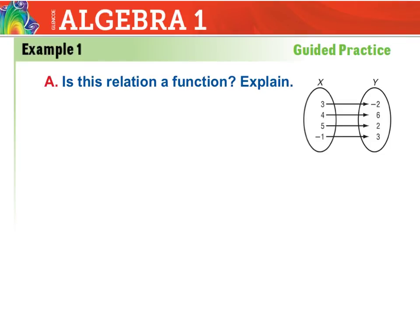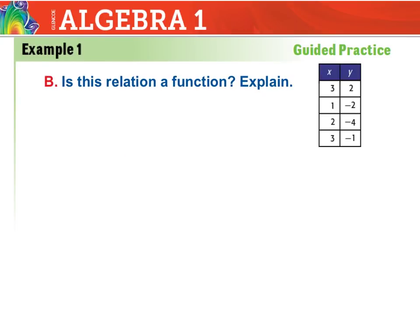Now we've got another mapping. Is this one a function? None of your x values repeat — 3, 4, 5, negative 1 — so this has to be a function. Now here's another table. Focus in on your x values — and this is the first time I see two of the same x values. Three in the first row gives me 2, and then the second 3 gives me negative 1. We can't have the same x value give me two different y values. If that happens, you are not a function.